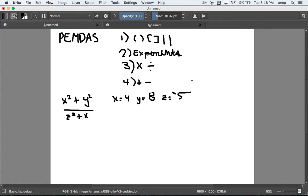Then we can do our exponents. We have our variables here - let's just get these numbers plugged in real quick. We have x² and x = 4, so that'll be 4² plus y², which is 8, so 8² divided by... and this is a very important thing to know and remember.